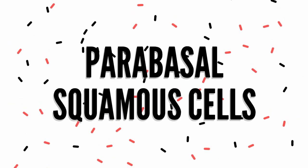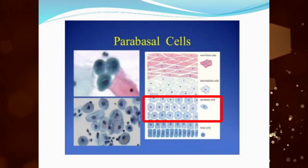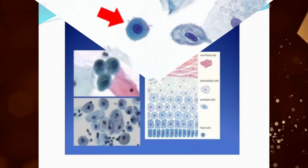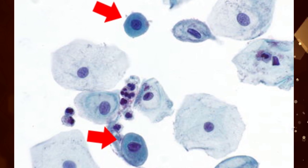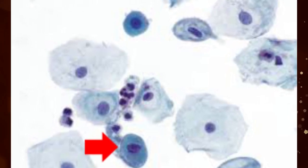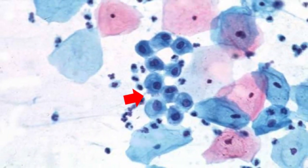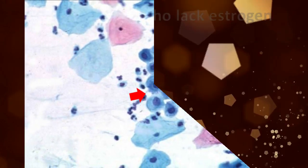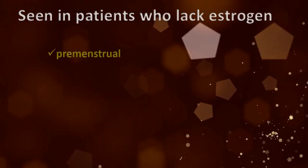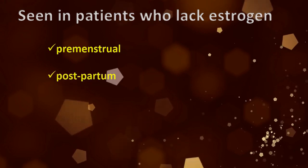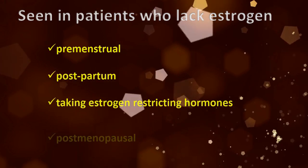Parabasal Squamous Cells are found in the basal layer of the squamous epithelium. They are usually seen singly or in sheets, with a round or oval shape and dense green cytoplasm. The nucleus of the parabasal cell is centrally located, round or oval, and occupies about half of the cell. Fine evenly granular chromatin can also be seen. These cells are often seen in patients who lack estrogen, including those who are premenopausal, postpartum, taking estrogen-restricting hormones, or postmenopausal.